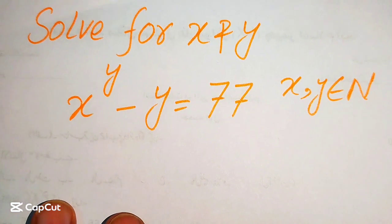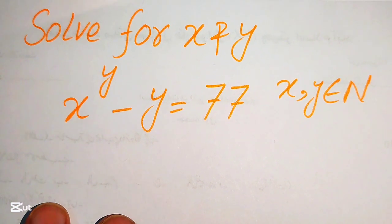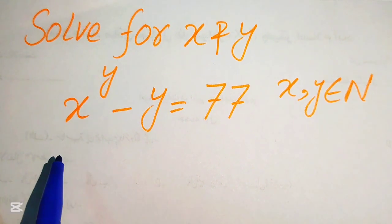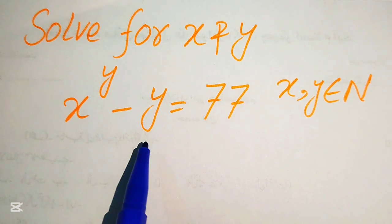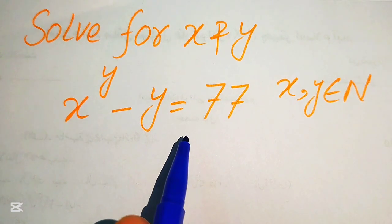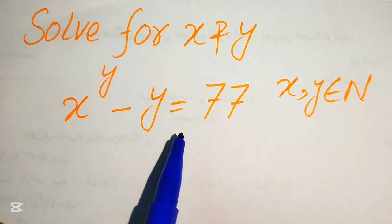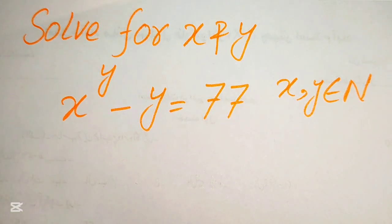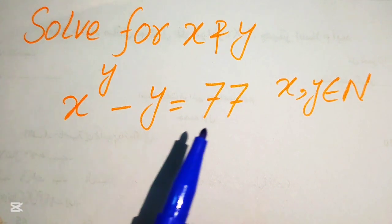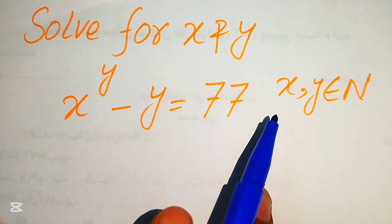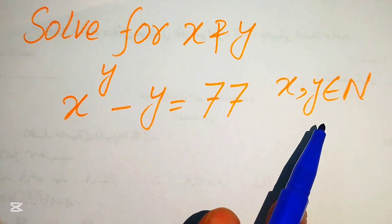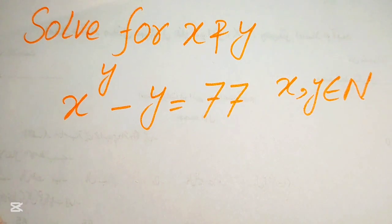Hello everyone, welcome to solve this nice math or algebra problem. Here we have x to the power of y minus y equals 77, and we solve this problem for the values of x and y. Remember that x and y belong to ℕ, which means this is the set of natural numbers — we solve this for natural values of x and y.